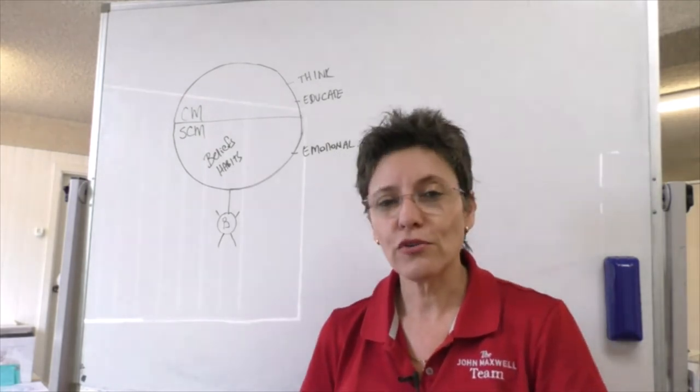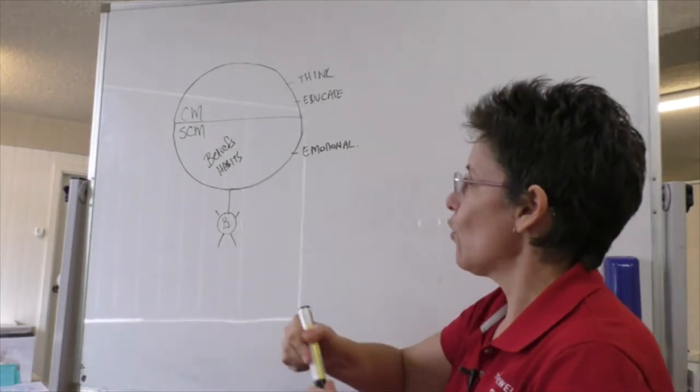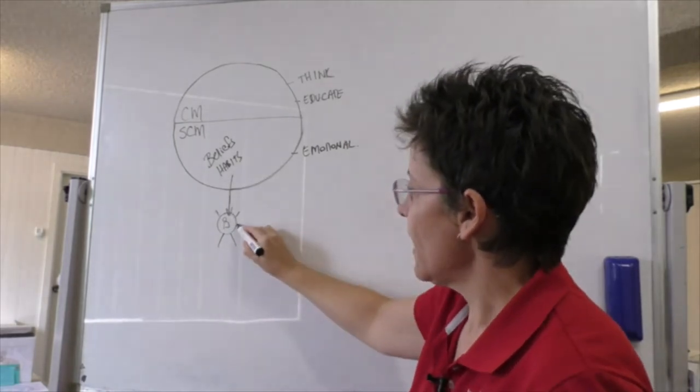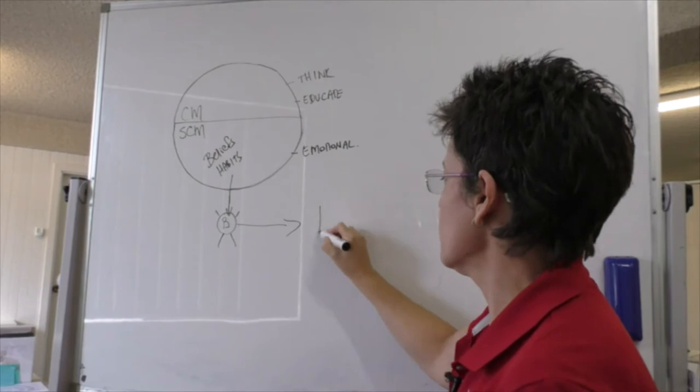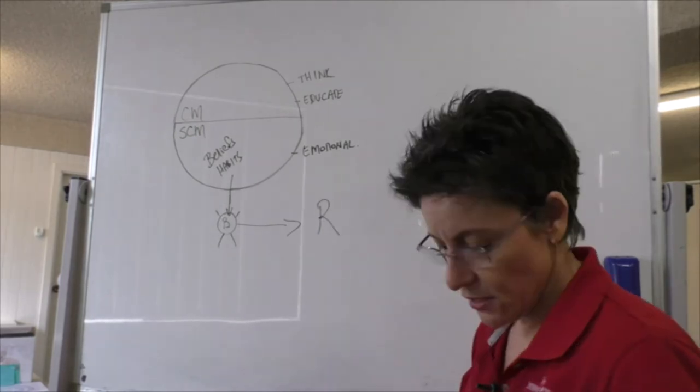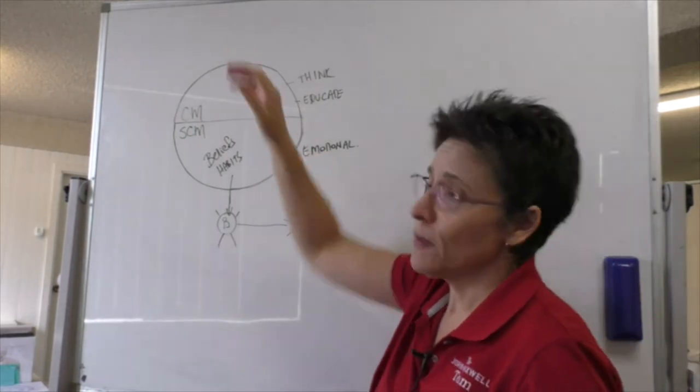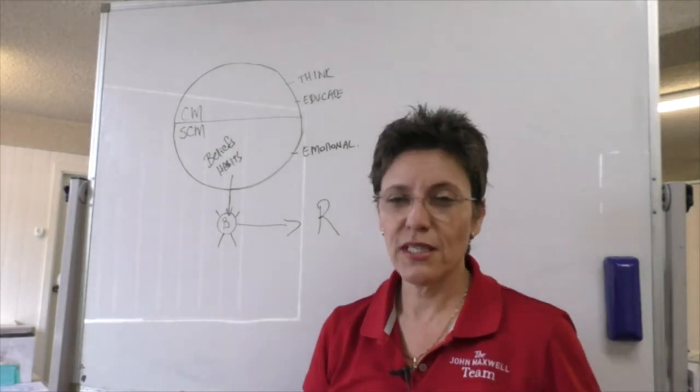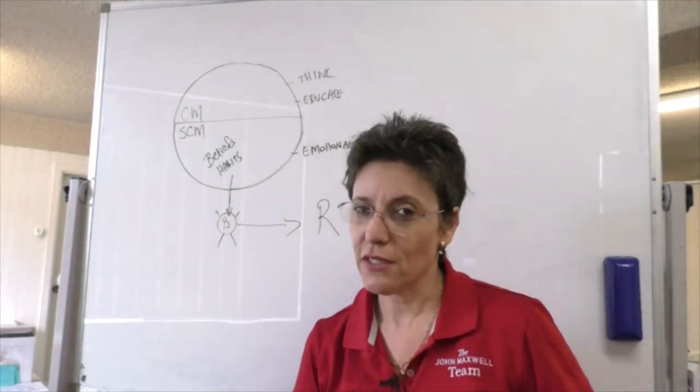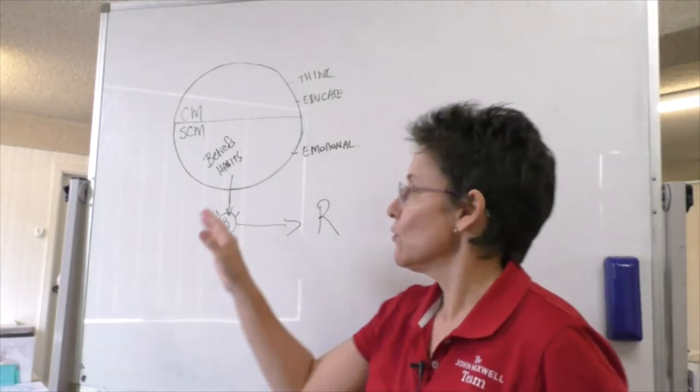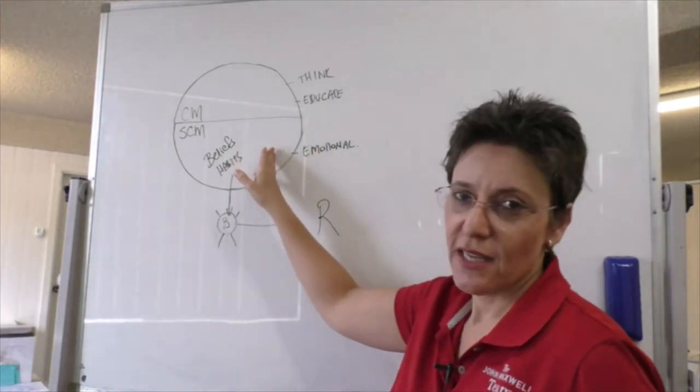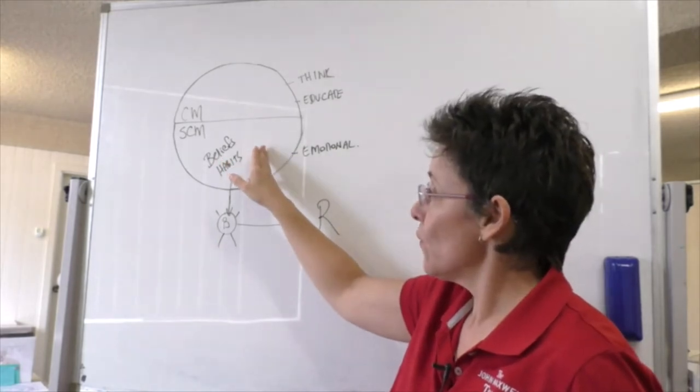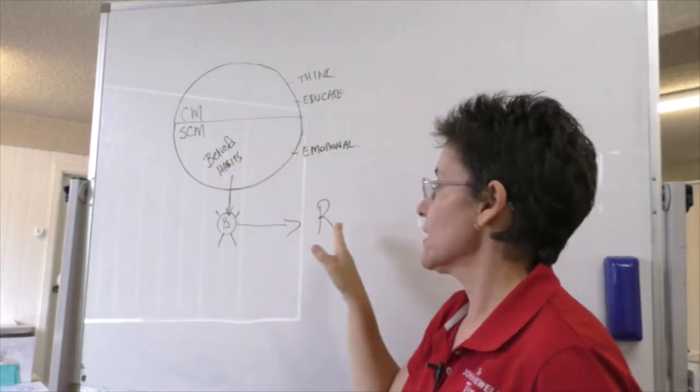Because our behaviors are all driven by the subconscious mind and all our behaviors, of course, give us our results. How many people do you know that have got a lot of knowledge and education? Maybe they've got multiple degrees, but they don't get really very good results. And as I said, it's because of our conditioning. This is our paradigm. This is what drives the behaviors that give us our results.